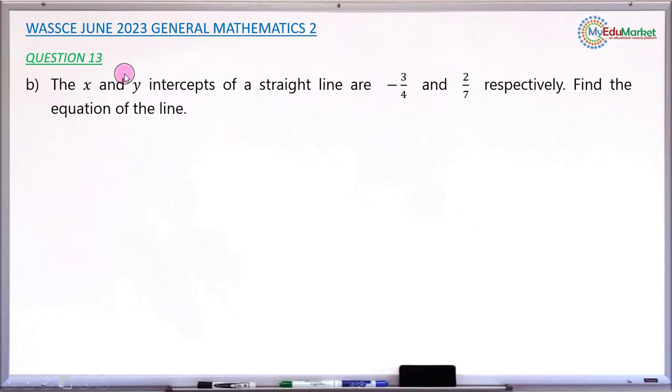This is WASSCE June 2023 General Mathematics Paper 2, and we are answering question number 13b. The question says the x and y intercepts of a straight line are minus 3 over 4 and 2 over 7 respectively, which means minus 3 over 4 is the x intercept and 2 over 7 is the y intercept of that very line.